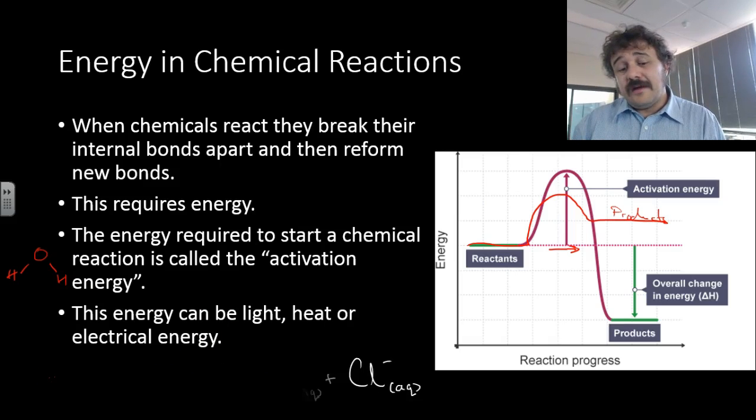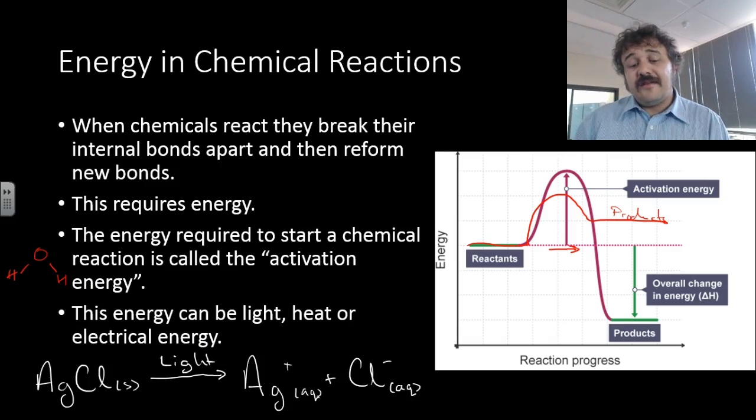Another example is the action of light on a silver halide. So a halide being a halogen, silver halide, silver chloride. We add light and that decomposes it into the ions, silver and chloride ions.